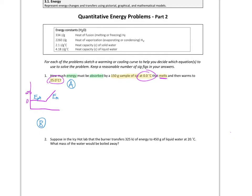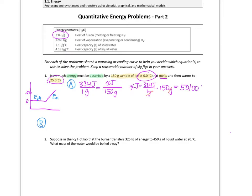Since ice is melting, we use the heat of fusion. That's 334 joules per gram, set equal to x joules over 150 grams. Multiplying 334 joules per gram times 150 grams, the grams cancel and we get 50,100 joules — that's just for the phase change of ice melting into liquid.